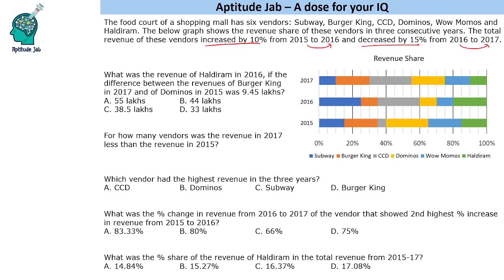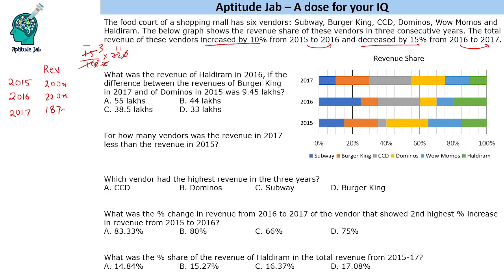Since we are not given the actual revenue and the questions are percentage-based, we assume a base revenue. If we take 2015 revenue as 100x it becomes 110x, but 15% of 110 is a decimal. So instead, let us take 200x as the revenue in 2015. This makes it 220x in 2016, and 15% of 220 is 33, so subtracting gives 187x for 2017. These integer values help us calculate faster.